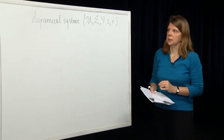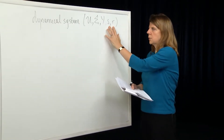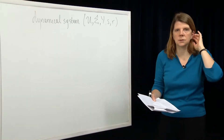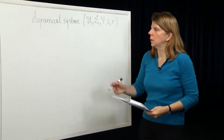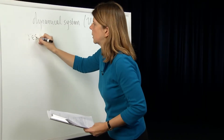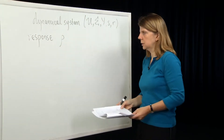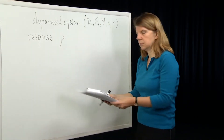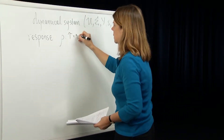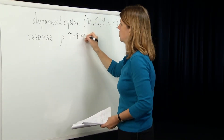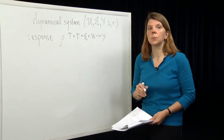In order to define linearity, we're going to define another component of a dynamical system derived from the essential components we already have. That's what we call the response map, or the output response of a dynamical system. We define the response rho to be a function over the same spaces as the state transition function. It takes the time axis tau cross tau, cross the state space, cross the input space, and maps to the output function space.